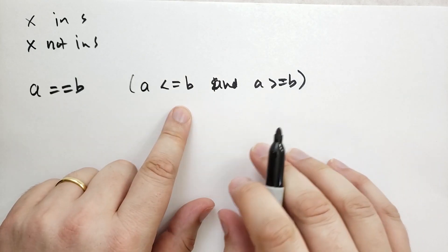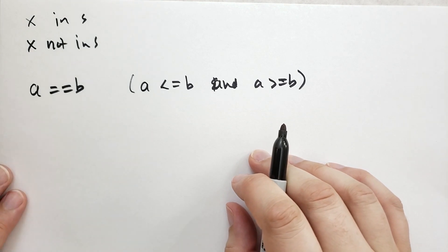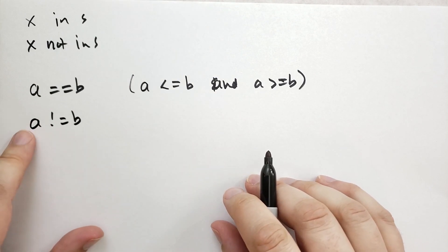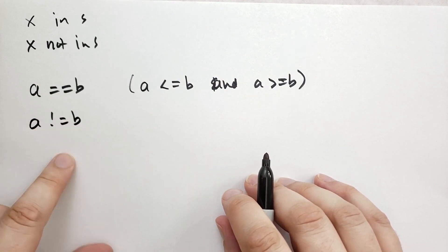At first this doesn't make a lot of sense, but it will make sense when you study sets theoretically at a mathematical level. We also have a is not equal to b and this is true if there are elements in a that are not in b or vice versa.